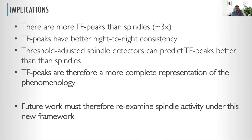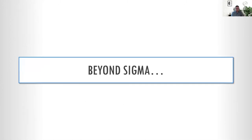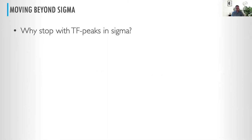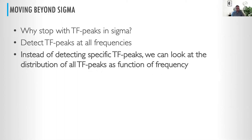So what's next? What if we look beyond sigma? Why stop at just looking at TF peaks in the range where spindles are known? What if we detect time-frequency peaks at all frequencies? Instead of saying which ones matter, we take a more agnostic approach: pick all the peaks we find — big, small, long, short, whatever — and then just look at the distribution of peaks at each frequency. We take the spectrogram of the entire night, look for time-frequency peaks at all frequencies using an improved automated method, and get about 60,000 peaks per night.